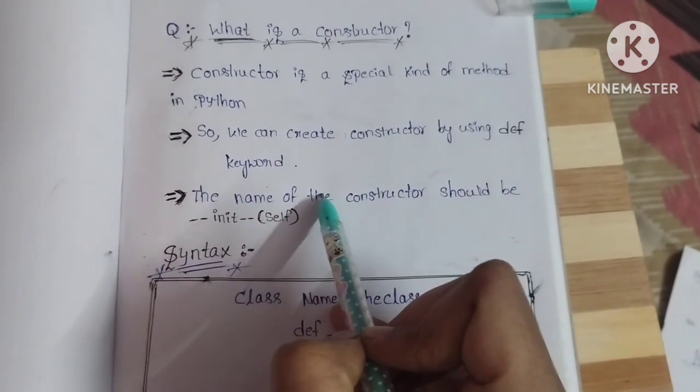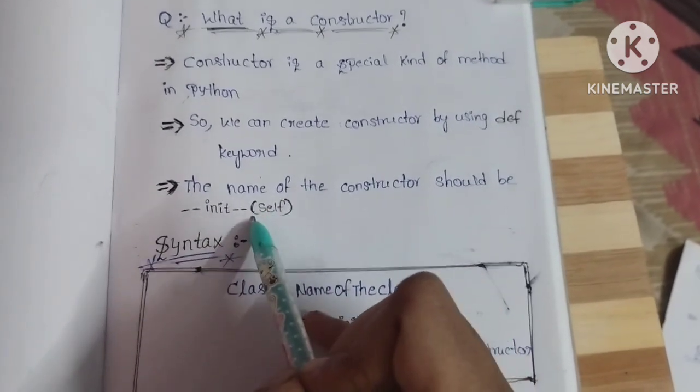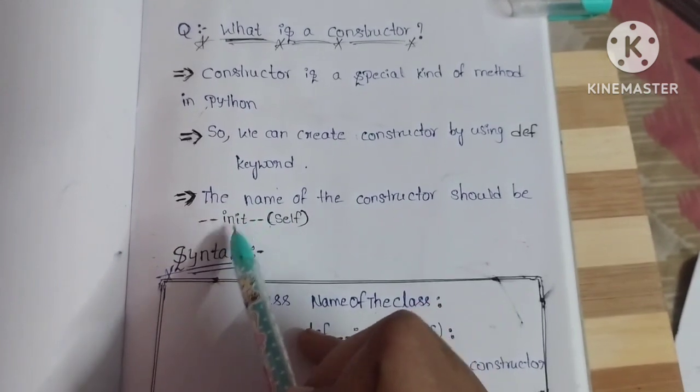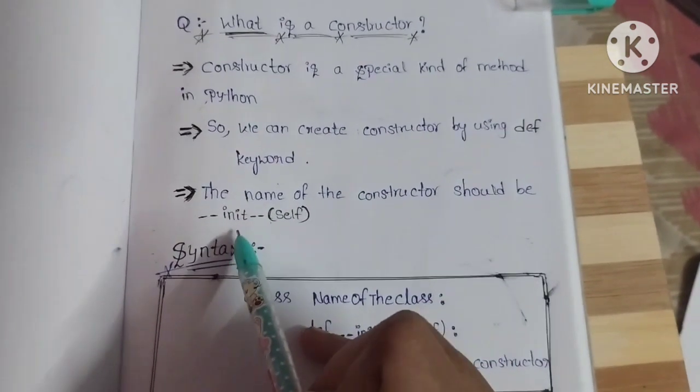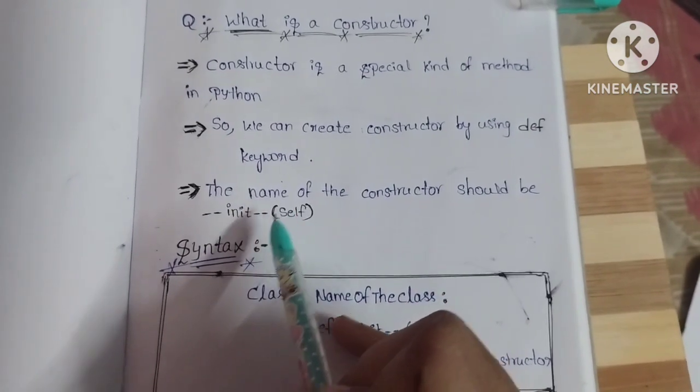The name of the constructor should be two underscore symbols before and after init. Self should be the first parameter in the constructor. Next is the syntax of constructor.